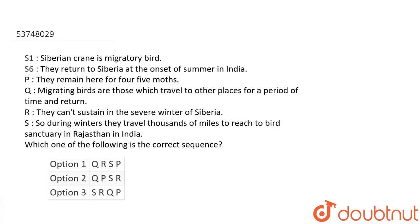Hello students! Our question is a sentence rearrangement. We have given sentence number 1 and sentence number 6. The rest of the four sentences, we have to arrange in the right order which gives a proper meaning. Look at the first sentence — you can see the pronouns, you can see the adverbs, you can see the connectors; you will know which one you have to use.